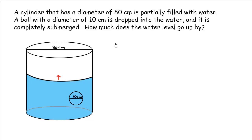Let's try a tricky volume question. A cylinder has a diameter of 80 centimeters and is partially filled with water. A ball with a diameter of 10 centimeters is dropped into the water and is completely submerged. How much does the water level go up? The key here is to recognize that when you put things in the water, the water level rises — imagine jumping into a bathtub.